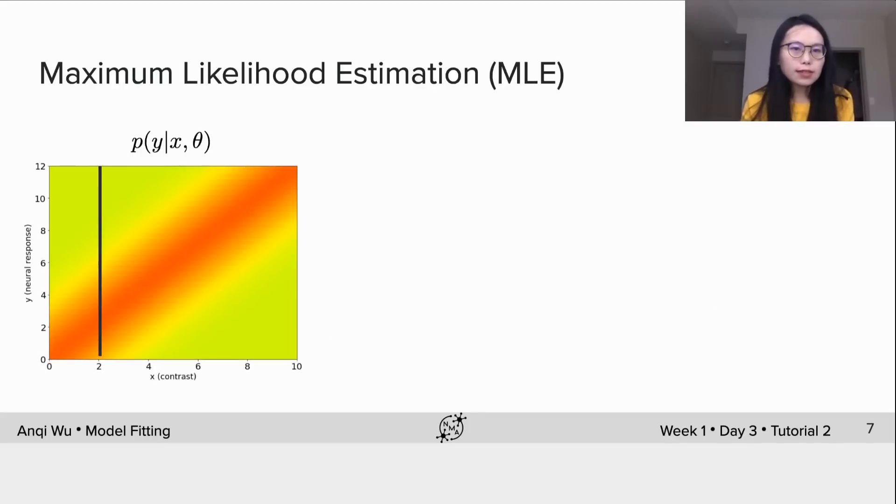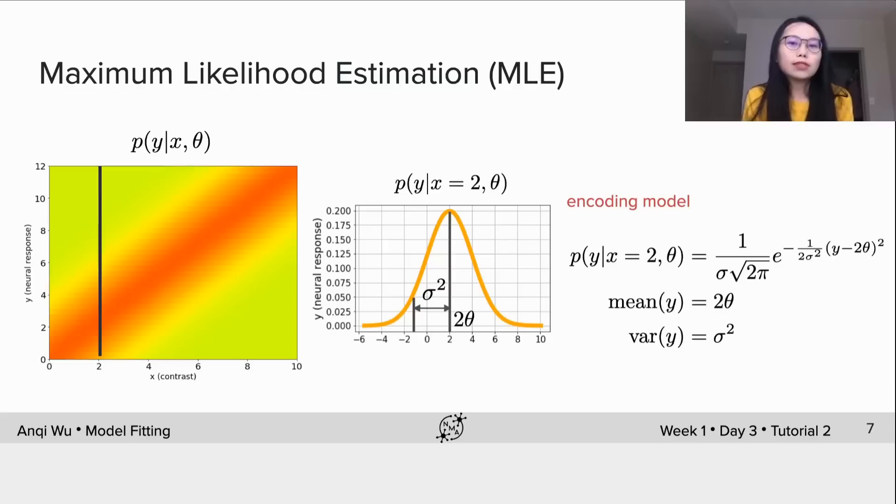We could also take another slice, say x equals 2, and visualize the 1D distribution function. This is now a 1D Gaussian with the mean at 2 multiplying theta.